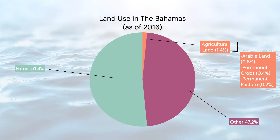Here we are looking at a pie chart that explains land use in the Bahamas as of 2016. Agricultural land is broken down into arable land, which is defined by the Food and Agriculture Organization of the United Nations, also known as FAO, as land under temporary crops, temporary meadows for mowing or pasture, land under market or kitchen gardens, and land that is temporarily fallow. Arable land is cultivated for crops such as wheat, maize, and rice, which can all be replanted in the same land after harvest. Land use for permanent crops are cultivated for crops not replanted at the end of harvesting season, such as fruit trees, vines, and flowering shrubs.